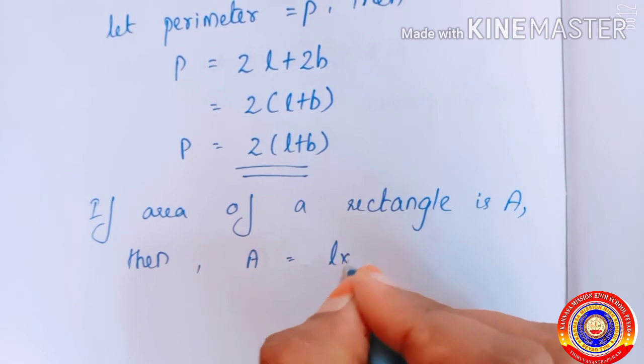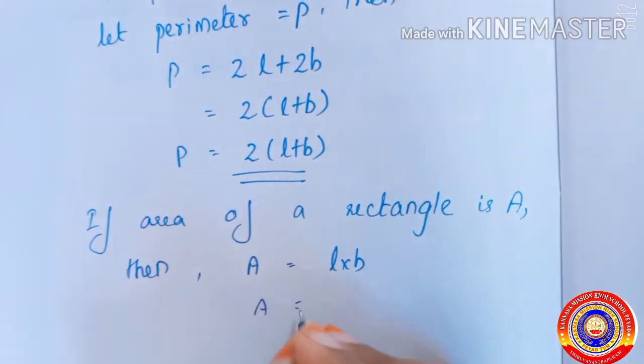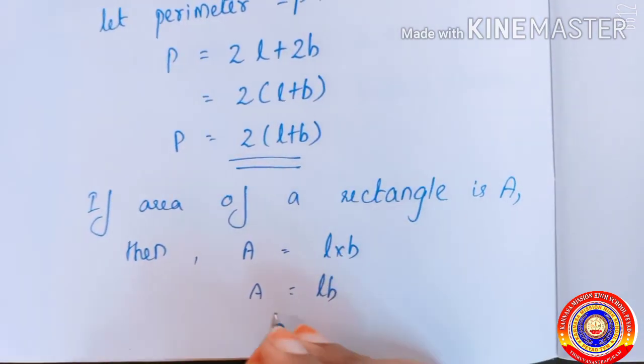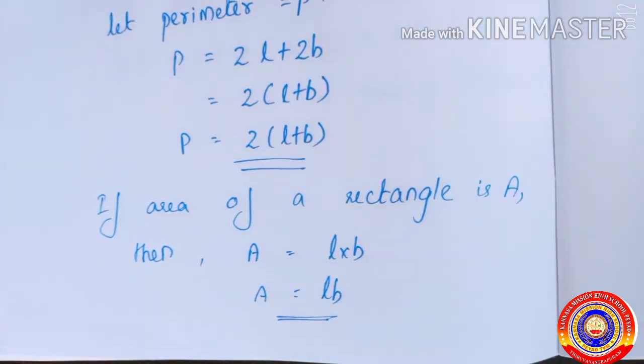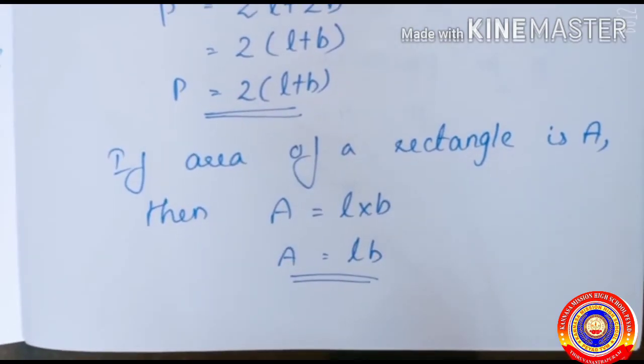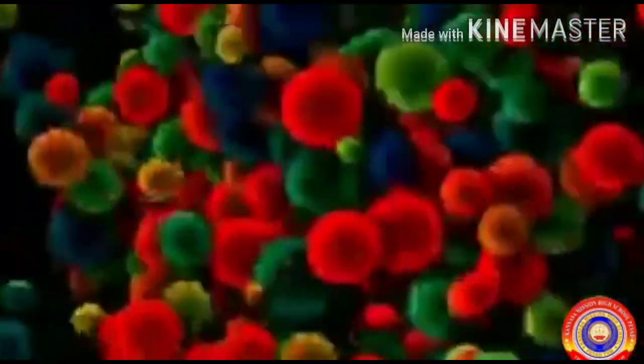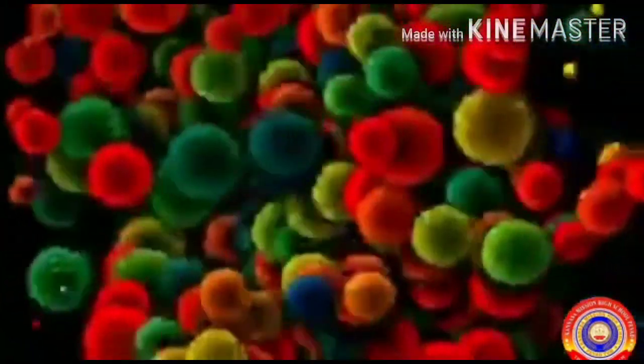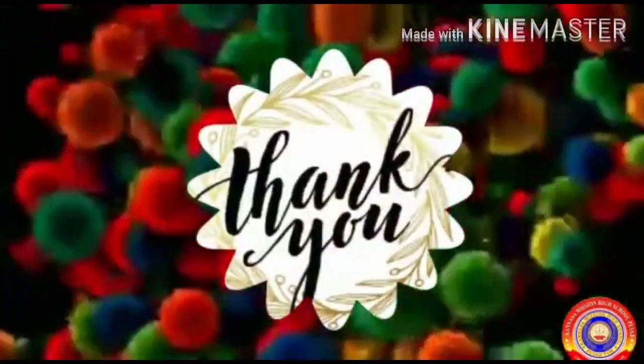That is A is equal to L into B. This is how we are using the letters for writing the arithmetical operations. Okay children, in the coming classes we will discuss more arithmetical operations using letters and numbers. That's all for today, thank you.